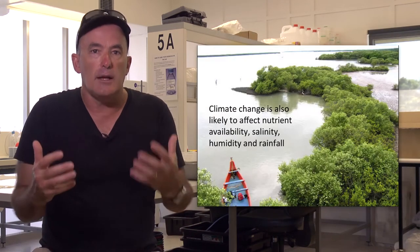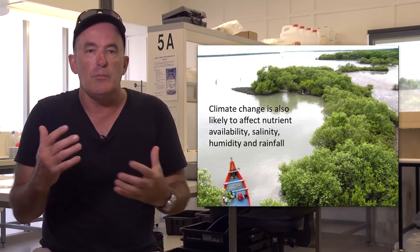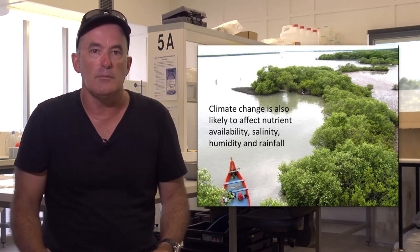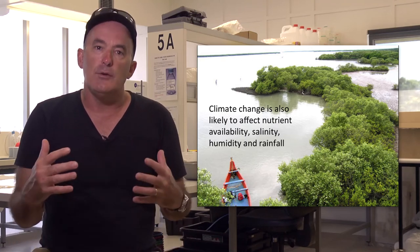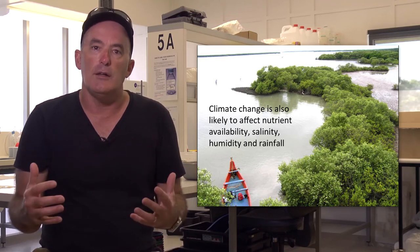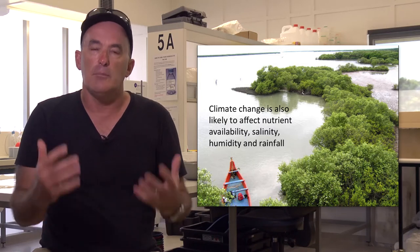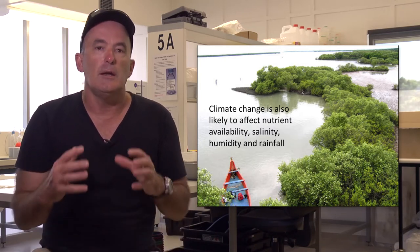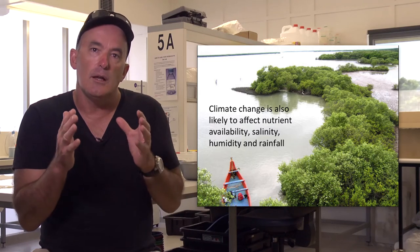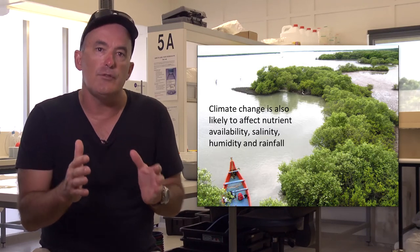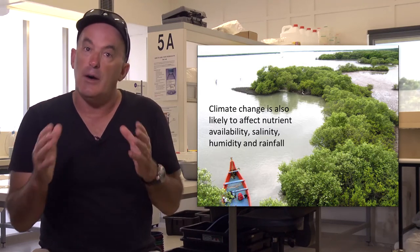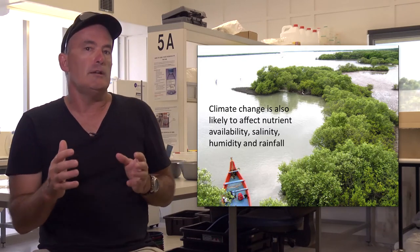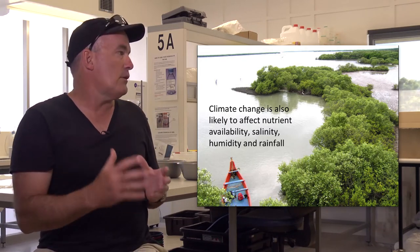Climate change is likely to affect other important variables when it comes to mangrove ecosystems. Changes to rainfall along coastlines can have a large influence on mangrove ecosystems. Similarly, droughts and changing lightning strike frequencies can change the fire regime associated with mangrove forests, leading to the loss of mangrove forests.